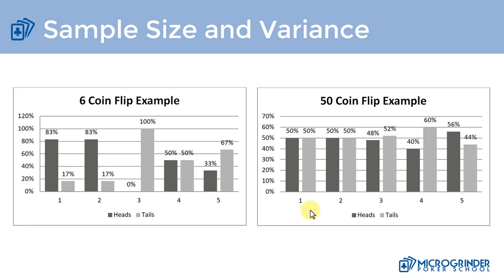With 50 flips: sample one and sample two come in at 50/50, exactly as expected. Sample three is very close at 48/52. Sample four is the one off by the most at 40/60, but that's not a huge amount. Sample five is 56/44, off by just a little. This tells us that as sample size increases, variance dissipates.